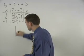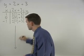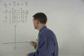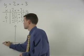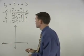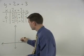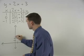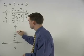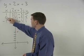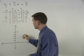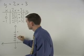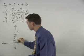Setting up our coordinate system, we plot the points (1, 5), (0, 3), and (negative 1, 1).